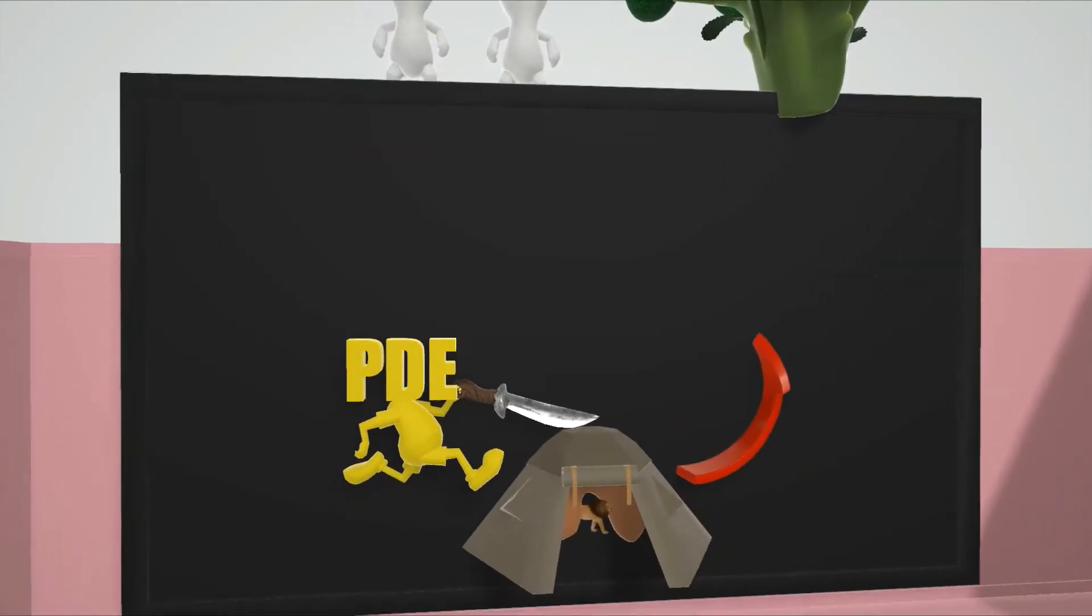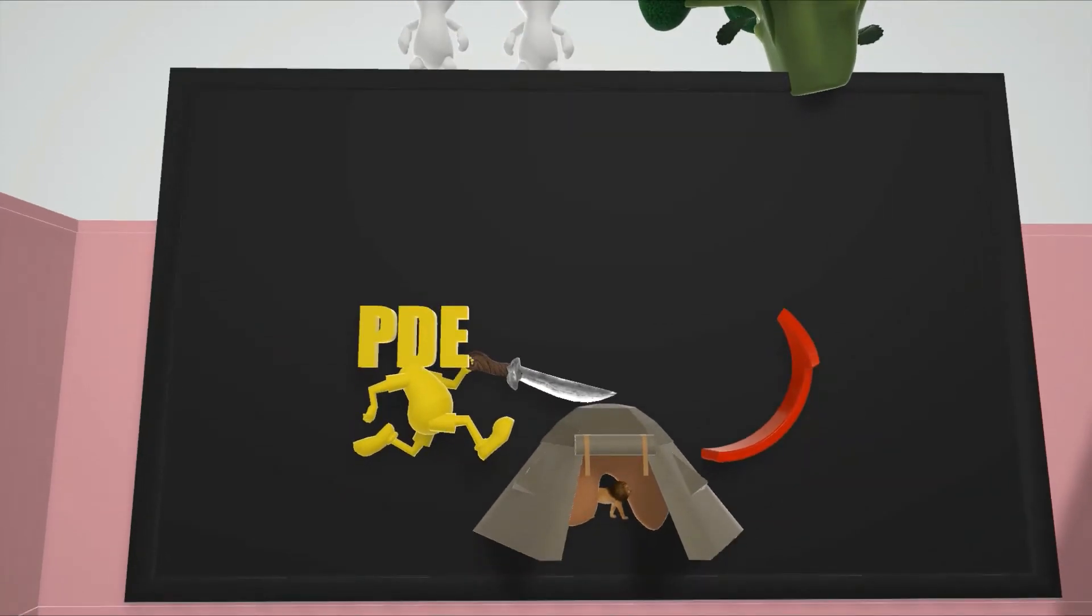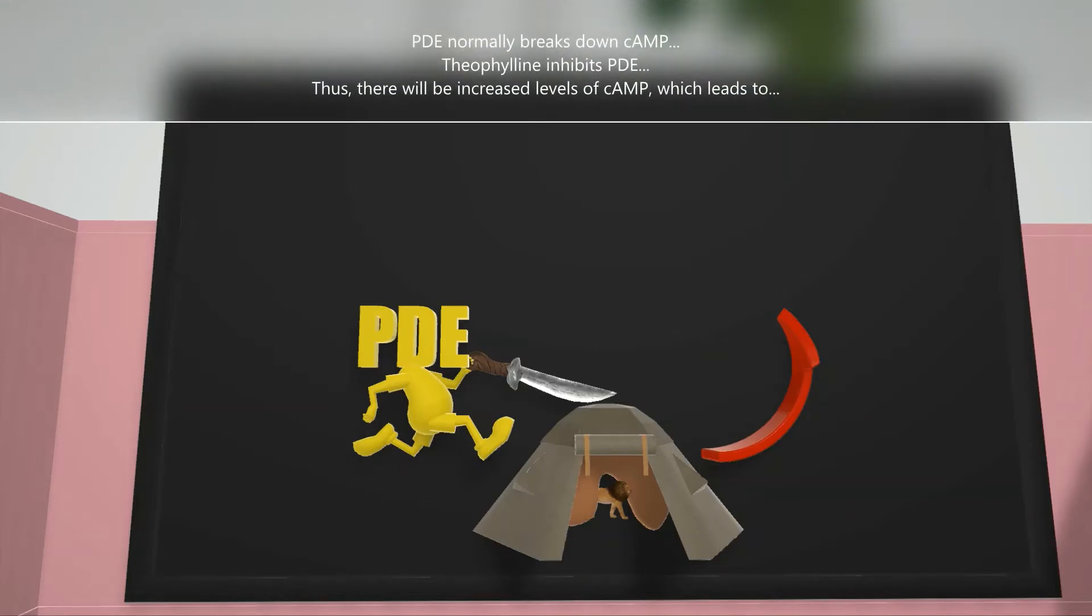Over here, we see the PDE guy on the screen about to attack this camp tent. That's what PDE, or phosphodiesterase, normally does. It normally breaks down cAMP to AMP.